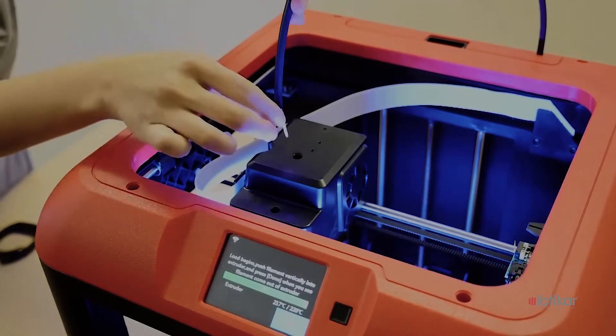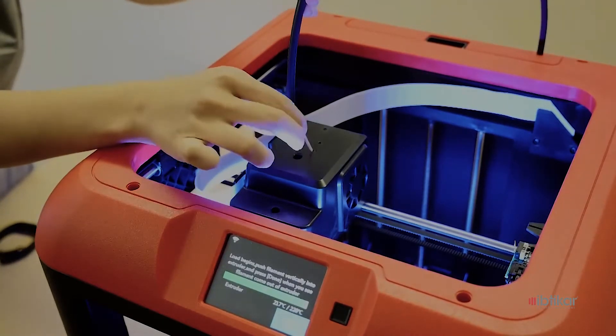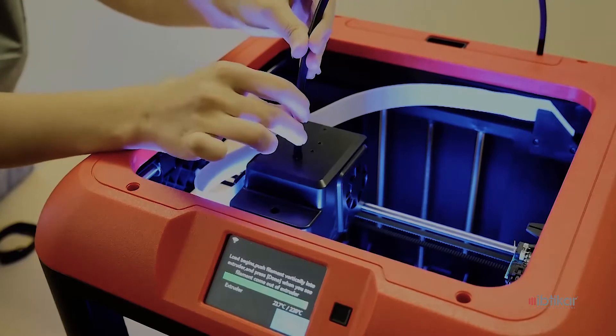load the new filament by pushing the filament into the top of the extruder until you feel the extruder pulling the filament through the printer head.